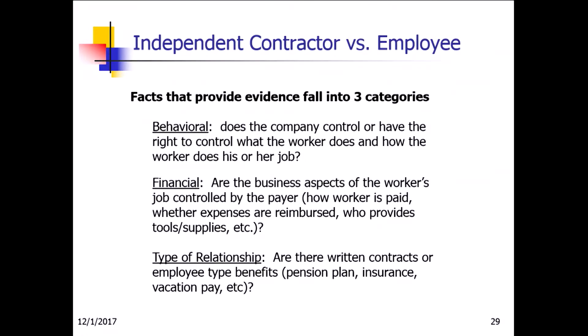Behavioral: does the company control or have the right to control what is being done? Financial: are the business aspects of the worker's job controlled by the payer — how the worker is paid, whether expenses are reimbursed, who provides the tools and supplies? And type of relationship: are there written contracts? Is the employee getting a pension plan, insurance, or vacation? If so, more than likely that person is an employee rather than a contractor.